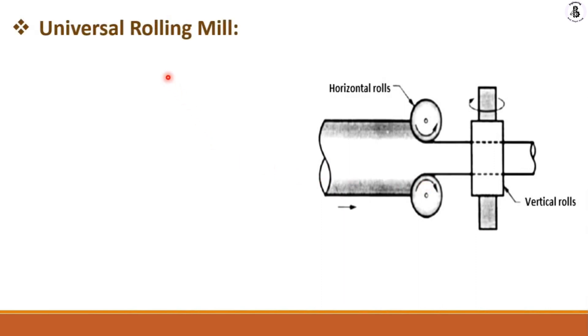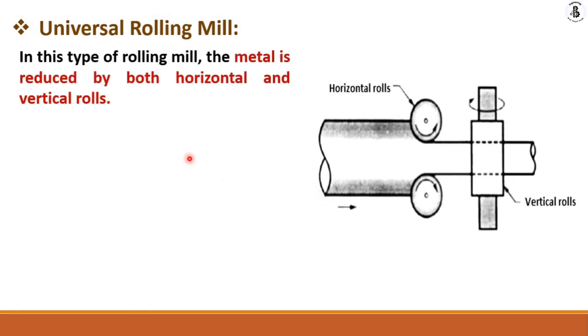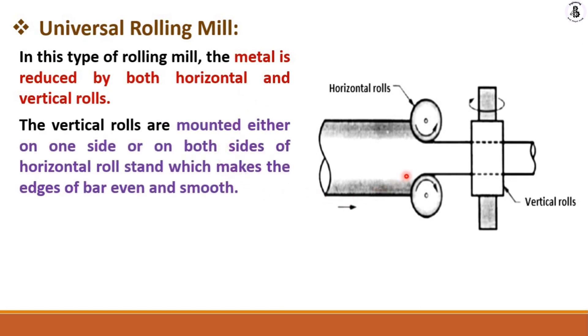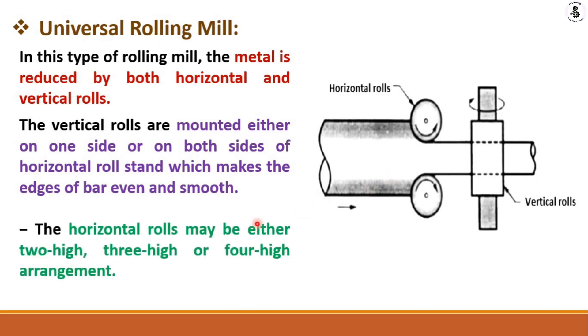Finally, universal rolling mills use both horizontal rollers and vertical rolls. The workpiece is fed from one side, and the material is reduced by both the horizontal rings as well as the vertical rolls. The vertical rolls are mounted on one side or both sides of the horizontal stand, making the edges of the bar even and smooth. The horizontal rolls may be in a 2-high, 3-high, or 4-high arrangement. Thank you for watching — if you like this, please subscribe and share for more mechanical engineering tutorials.